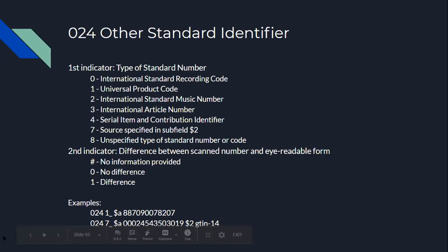The 024 field, the other standard identifier, will probably be found on more commercially published video recordings. This is going to be your International Standard Recording Code or your UPC symbol. You'll pick which kind of code for the first indicator, and the second indicator indicates if there's a difference between a scanned number and the machine-readable form. Most commonly people won't code the second indicator, but if it's significant to your library, you will want to.